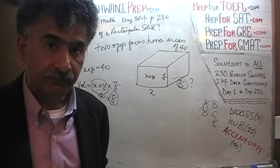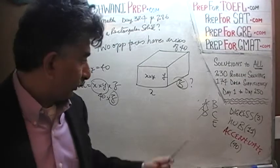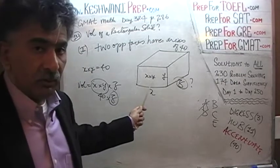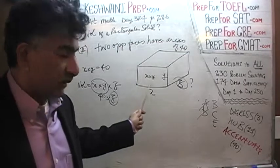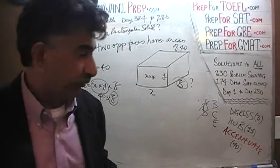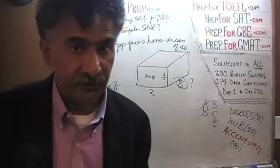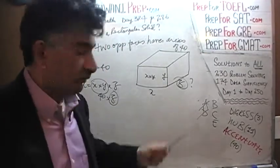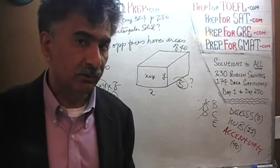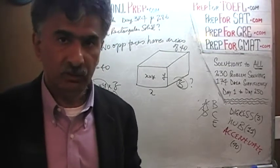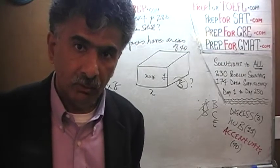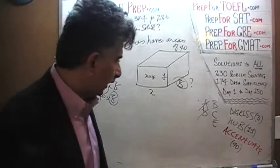It's okay if they give us the product of two dimensions instead of giving them separately, but we still need to know the third dimension. If Z equals 10, the volume is 40 times 10. If Z equals half, the volume is 40 times half. But they don't give us Z. The second statement by itself is also not enough, so we know the answer cannot be B.